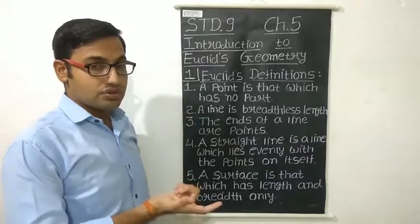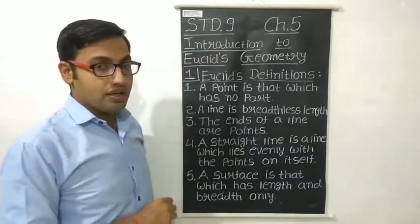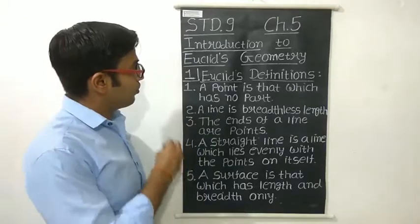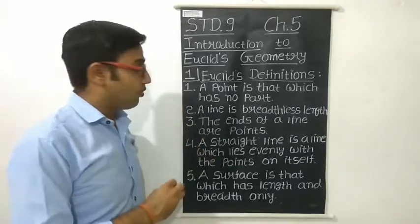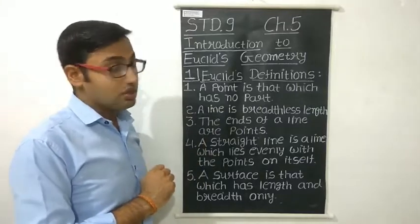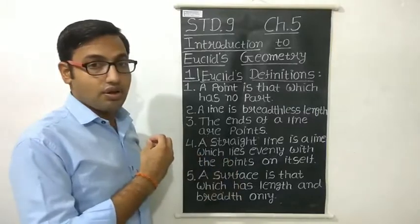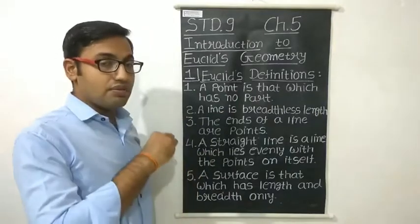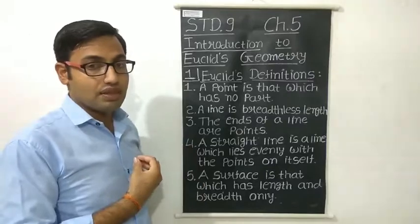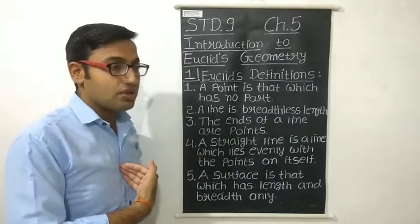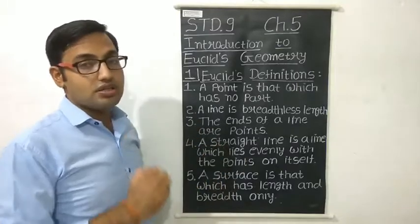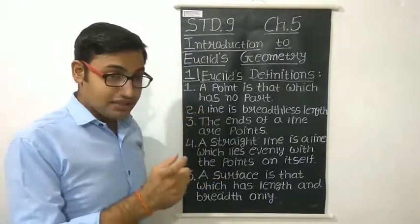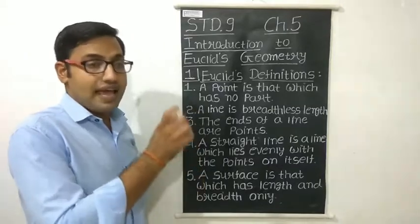In the previous class, we studied some basic concepts related to geometry. Now, who is Euclid? Euclid is a mathematician who gave the basics, who started the geometry, who used the word geometry for the first time, and who gave some definitions related to geometry. To understand geometry, we must have a foundation, and that base was given by Euclid using definitions, axioms, and postulates.